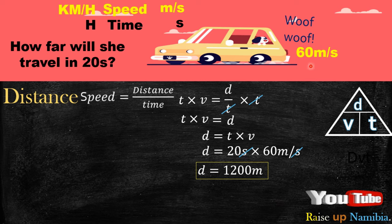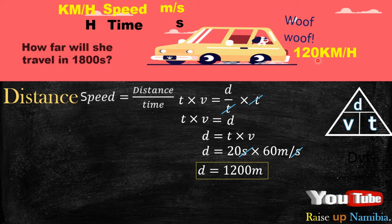Now, how about if you don't have 60 meters per second, but rather like the highway speed limit for Namibia, which is 120 kilometers per hour, and then your time is like 1800 seconds? Now again, check your speed here. You are given 120 kilometers per hour. Now, since your speed is in kilometers per hour, check your time. Is your time in hours? Now, when we check our time here, it's in seconds, which means you need to convert the seconds into hours.